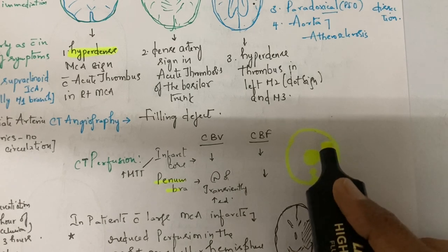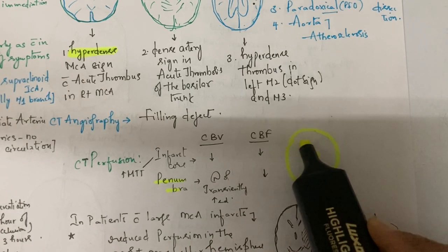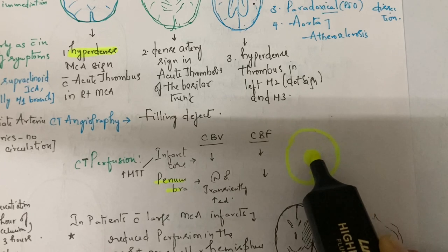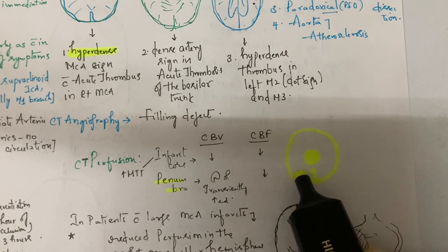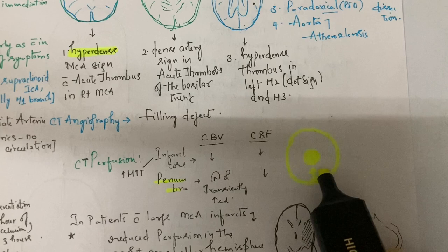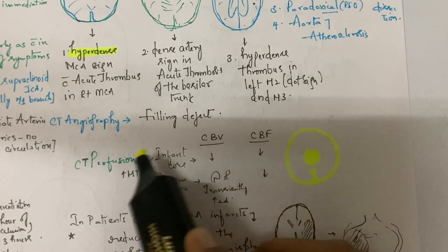In the infarct core, there is increased mean transit time, and both cerebral blood volume and cerebral blood flow decrease. In the penumbra, cerebral blood volume is normal or transiently increased, and cerebral blood flow is decreased. There's a mismatch.